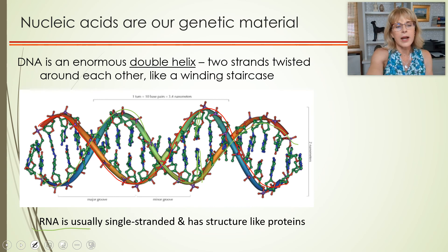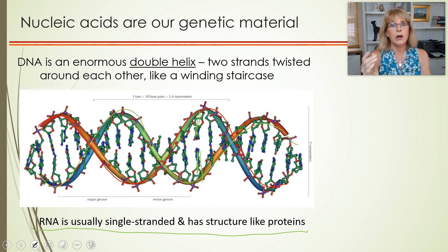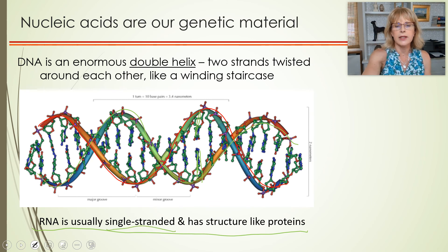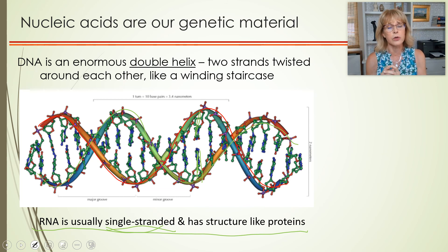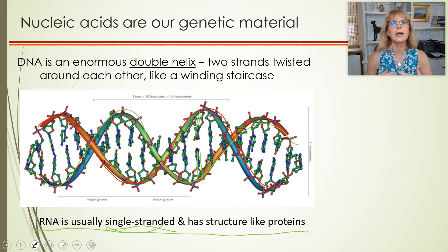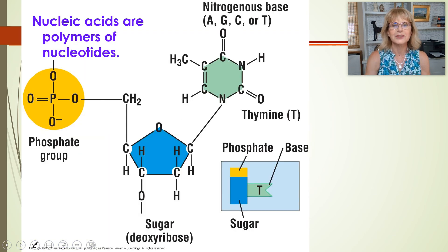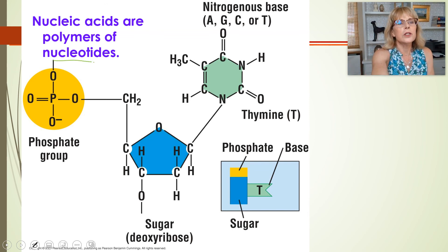RNA is also made out of nucleotides and is a relatively long strand — often hundreds of nucleotides long, though not millions. RNA is a single strand instead of a double helix. However, interactions between the nitrogenous bases of that single strand also create structure in RNA, similar to how protein structure arises from interactions between the side groups of amino acids.